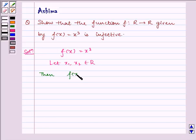Then f(x₁) = f(x₂) which implies x₁³ = x₂³ which implies x₁ = x₂ on taking cube root.